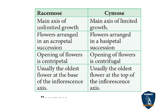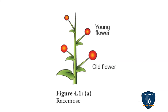Differences between racimose and cymose: In racimose, the main axis has unlimited growth; in cymose, the main axis has limited growth. Flowers are in acropetal succession in racimose, and basipetal succession in cymose. The opening of flower is centripetal in racimose and centrifugal in cymose. In racimose, the oldest flower is at the base; in cymose, the oldest flower is at the top. The axis of the inflorescence is called the peduncle.